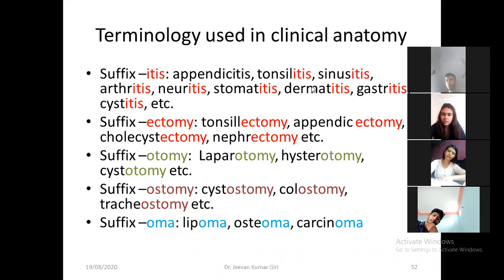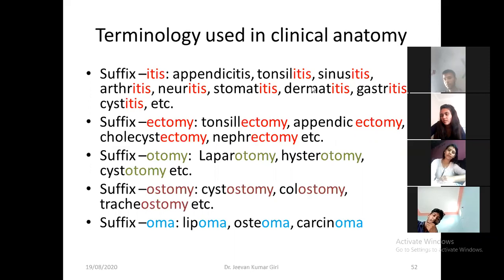Now the next suffix is '-oma'. If the '-oma' suffix is there at the end, that denotes a tumor — a growth or abnormal growth. So lipoma, osteoma, carcinoma — they all denote tumor. Carcinoma is the tumor of the epithelial lining. Osteoma is the tumor of the bone. Lipoma is the tumor of lipid or fat cells. So '-oma' means tumor — if '-oma' is at the end, that denotes a tumor.